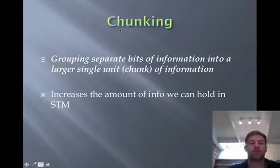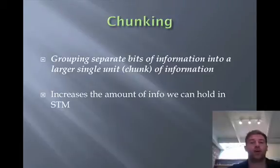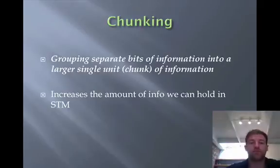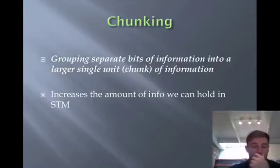So how do we get through life dealing with only 7 pieces of information? Our brains automatically try to chunk information together so we have more information per item. Notice it didn't say 7 words, or 7 letters, or 7 numbers — it said 7 items. Chunking is a process of grouping separate bits of information into a larger single unit, and this allows us to hold more information in our short-term memory.